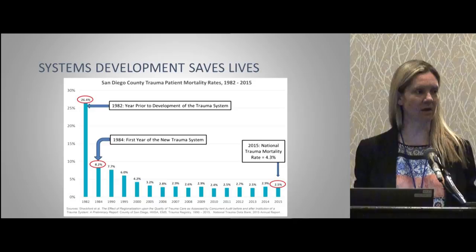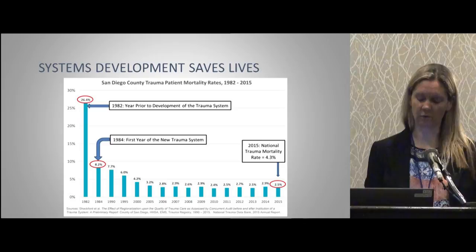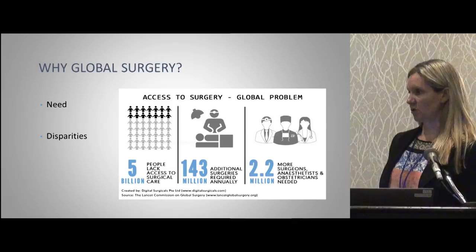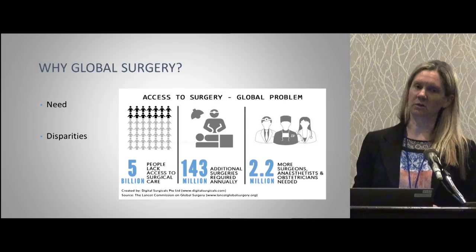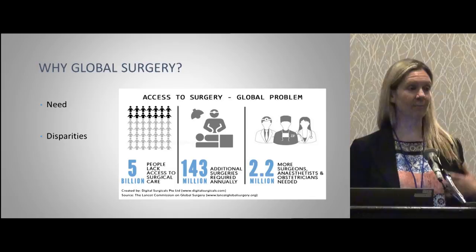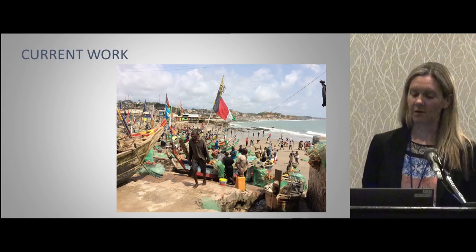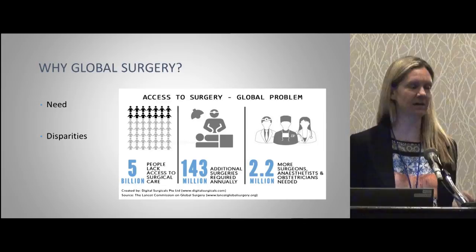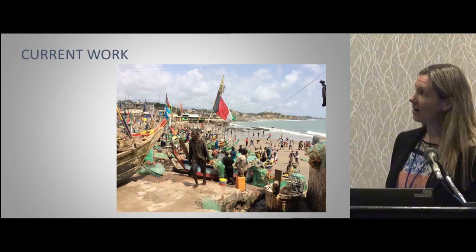So this is why we need global surgery: there's a need, there are huge disparities, and we can't fix all these problems alone. Even if everyone in the U.S., UK, and all of the developed world went over and said they'd go help and do surgery cases, we couldn't make a dent in what's needed. We have to help them fix this problem on their own — it's the only way we're going to get ahead of it.